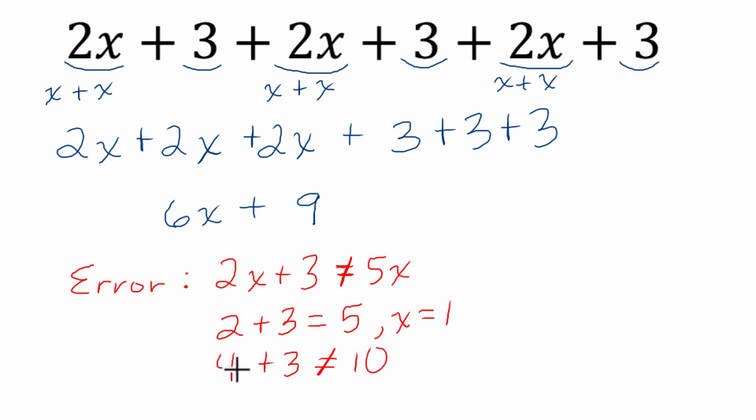So if we plug in 2 for x and we try to add these directly to say it's the same thing as 5x, it just doesn't balance. So we can't combine terms with variables and constants unless we know the value of x. Alright, thanks.